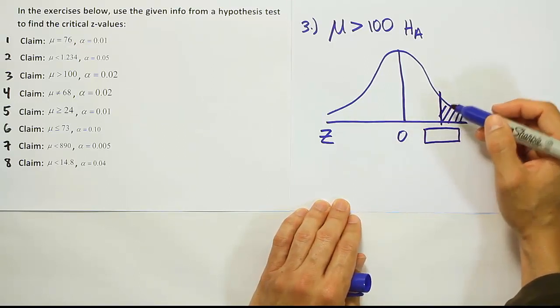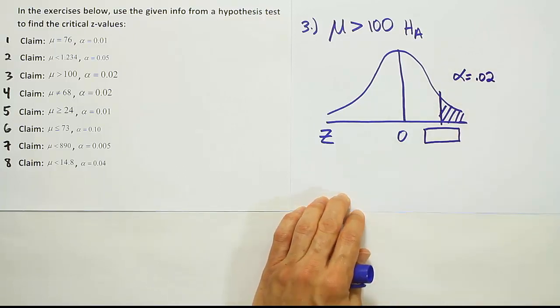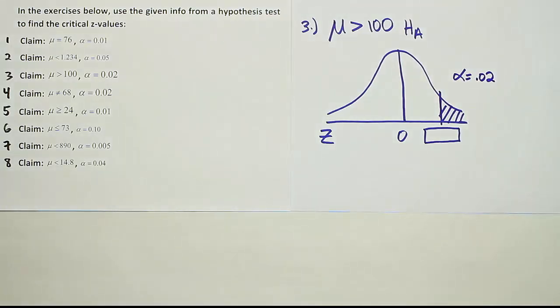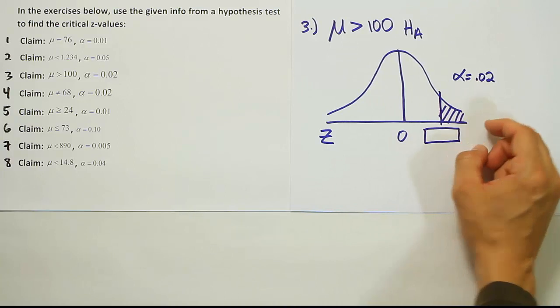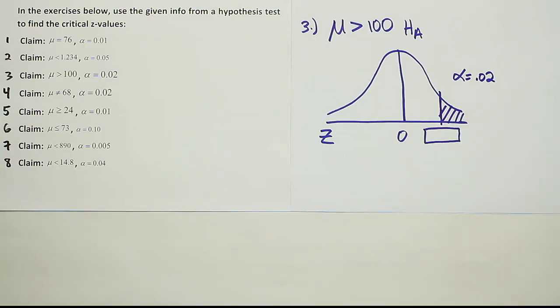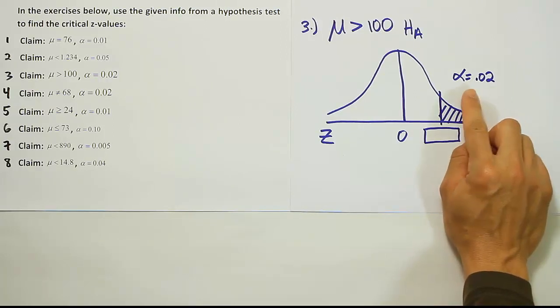And they tell us that alpha is 0.02. If that's the case, that means that we're looking for all of the alpha, the two percent, to be inside of this tail. It turns out that number is not going to be found on our t-table and because it's not found on our t-table, we're going to have to use the z-table to look that up.